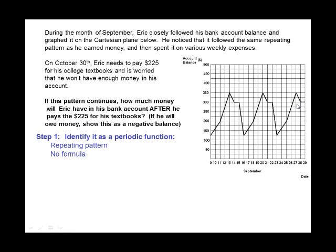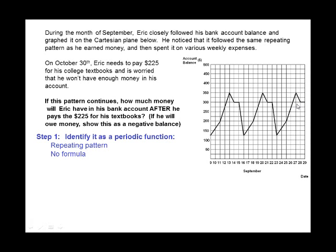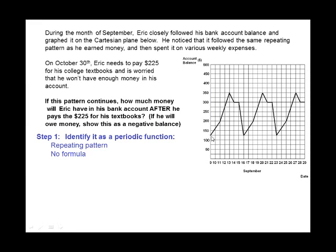First, we have to identify it as a periodic function. This is actually pretty easy. The periodic function just means we have the same pattern repeating over and over again. And if we look at the graph, we can quite clearly see that's what's happening.